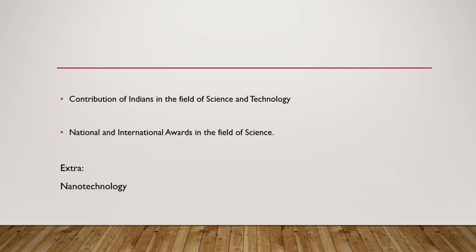Contribution of Indians in the field of science and technology deals with famous Indian scientists. This topic is a 3-marker and 5-marker topic and it is in your notes — you don't have to read it individually. Next is national and international awards in the field of science — like Nobel Prize. The Indian government gives different prizes as well and this is also in your notes.